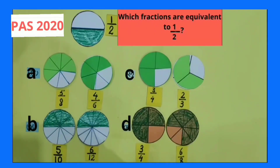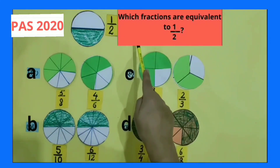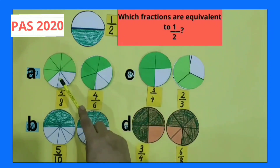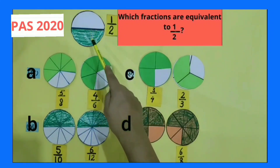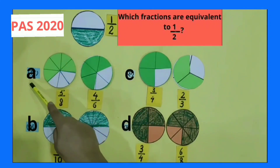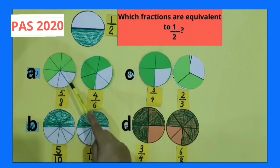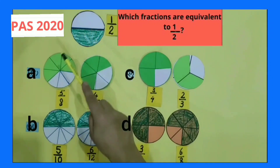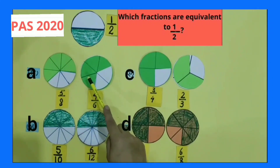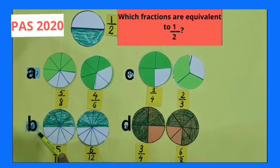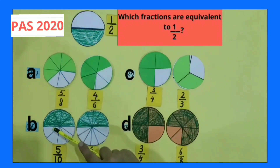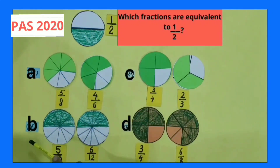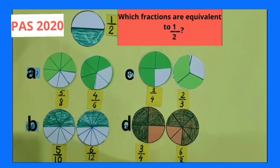Now we discuss one more question: which fractions are equivalent to 1 by 2? In this, 4 options are given and we have to choose the right option. Discussing option A — are these shapes equivalent to 1 by 2? No, these shapes are not equivalent to 1 by 2, so this is not our answer. Now discussing option B — are these shapes equivalent to 1 by 2? Yes, these shapes are equivalent to 1 by 2. B is our answer and you have to check the B option.